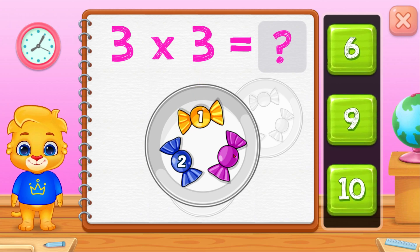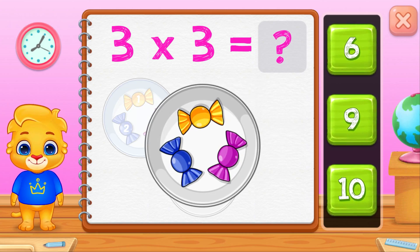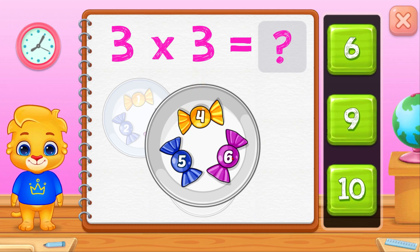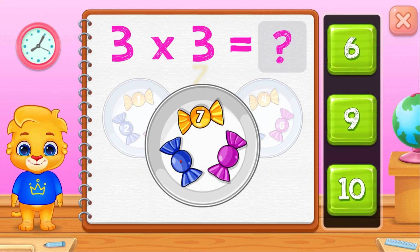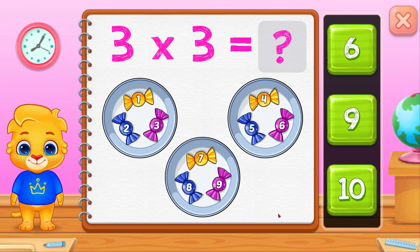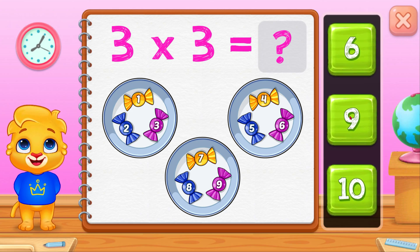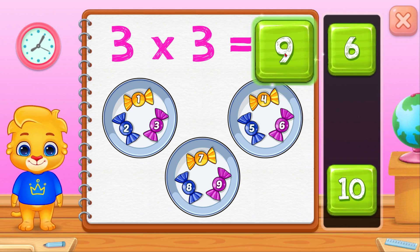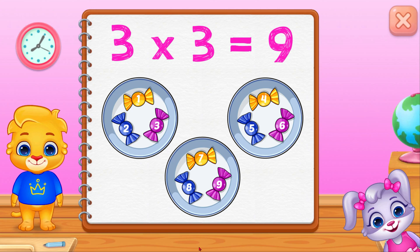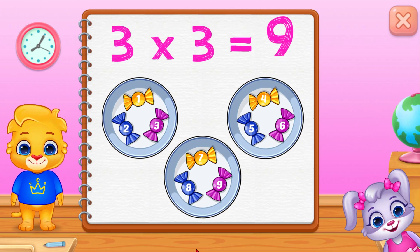Two! Three! Four! Five! Six! Seven! Eight! Nine! Nine! Ten! Six! Nine! Three times three equals nine!